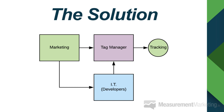IT controlled all the tracking, which slowed everything down. Enter the tag manager. A tag manager is a platform — a piece of script you put on your pages — and when it's enabled, both marketing and IT can work together with this tool. As a marketer, you can go into tag manager and control your tracking without having to rely on IT, especially when setting up something like Facebook pixels.